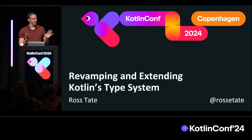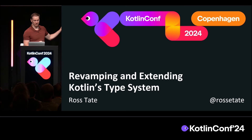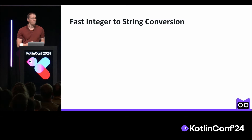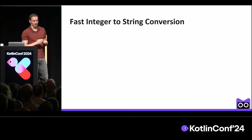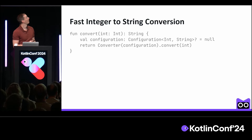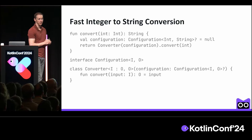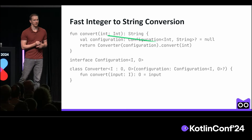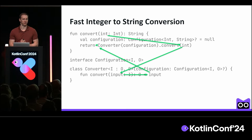But before I can explain that, I need to illustrate what I mean by revamping. To do that, we're going to look at a program that does really fast integer to string conversion. It's quite small. It has a convert function, a configuration interface, and a converter class. If you follow the integer in this program, you'll see that it passes through the code and gets returned as a string.